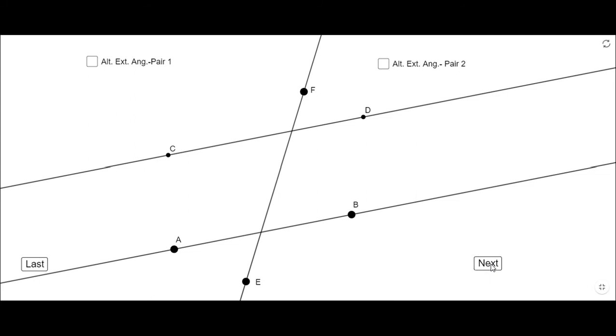I'm going to see what we call alternate exterior angles. Also here we have two pairs. Let's see the first one. You notice alternate exterior, they are exterior angles and one on one side of the transversal, one on the other side.